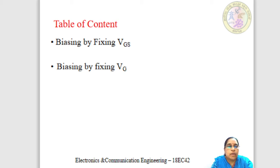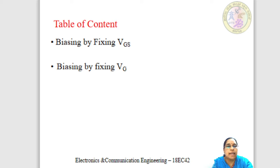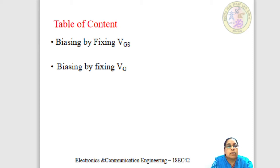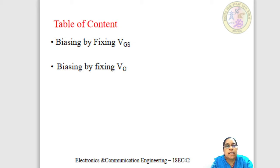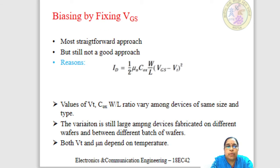Here you need to recall some basics regarding the MOSFET and its terminology. A MOSFET has three terminals: gate, drain, and source. Whenever we write VGS, it means voltage between gate and source terminal. When source is grounded, VGS can be written as equal to VG. Similarly, VDS is the voltage between drain and source terminals. Another important notation is the drain current ID. By looking at these equations, you may recall the remaining terms associated with MOSFETs.